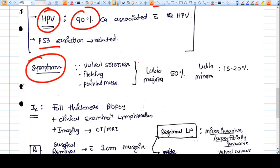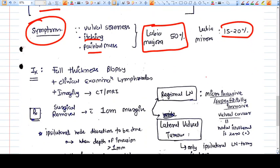What are the symptoms? Vulval cancer is just like local vulval soreness, itching, a painless mass can be seen. The site of that is labia majora in majority of cancer, 50 percent, and labia minora is around 15 to 20 percent. So labia majora is the most common site of vulval cancer.